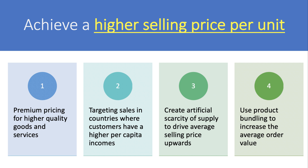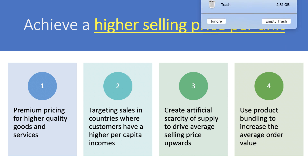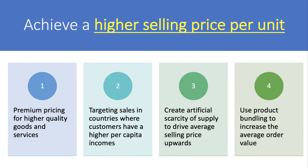Other businesses target sales in countries where customers have a higher per capita income and where living standards are higher, which again means you can charge higher prices. Some firms deliberately limit the supply of the product - limiting the quantity to create artificial scarcity. And scarcity of supply allows them to charge a higher price, particularly if there's a secondary market where people can resell. Bundling is also a good example: it's where you put together three or four items that might have been sold separately, bundle them together in a smart way, and as a result you're able to get a higher value from what you're selling.